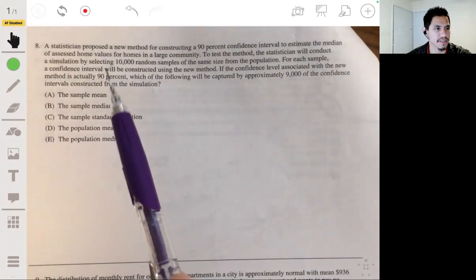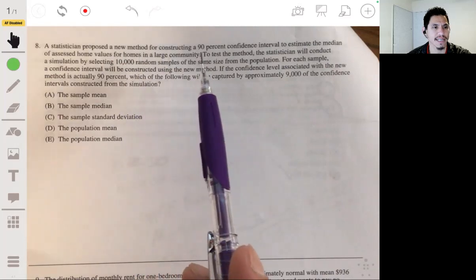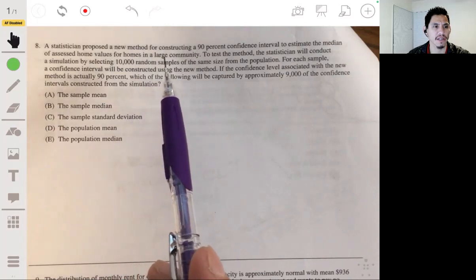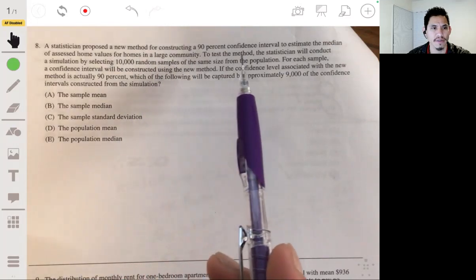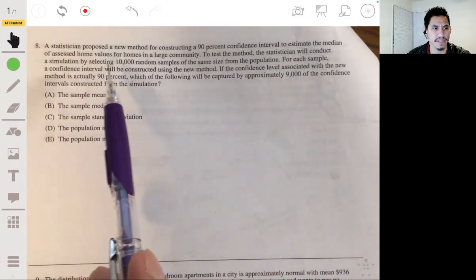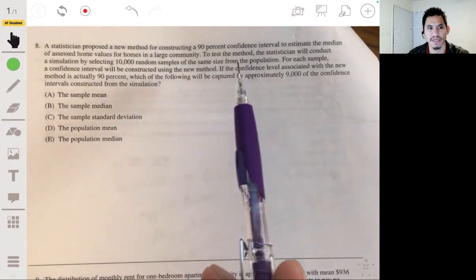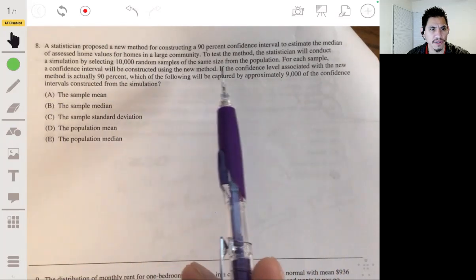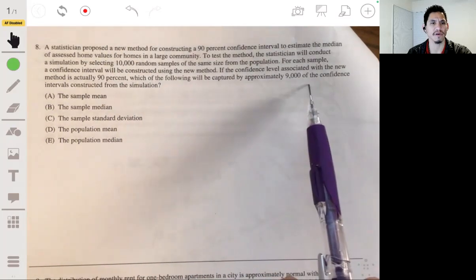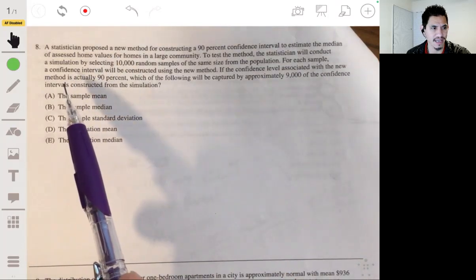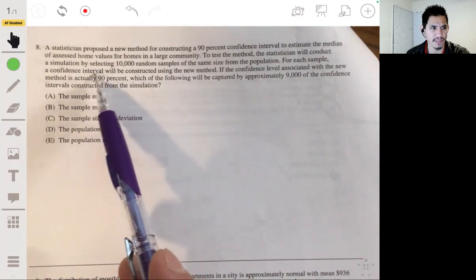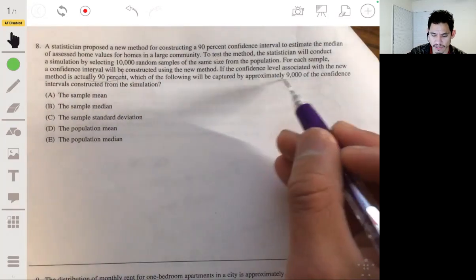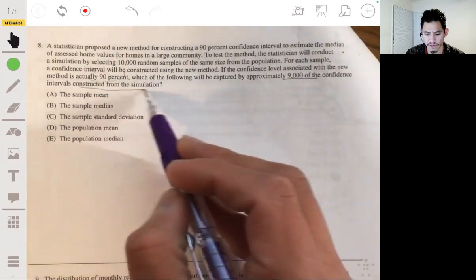Alright, problem eight. We have a statistician that proposed a new method for constructing a 90% confidence interval to estimate the median of assessed home values for homes in a large community. To test the method, the statistician will conduct a simulation by selecting 10,000 random samples of the same size from the population. For each sample, a confidence interval will be constructed using the new method. The confidence level associated with the new method is actually 90%. Which of the following will be captured by approximately 9,000 of the confidence intervals constructed from the simulation?